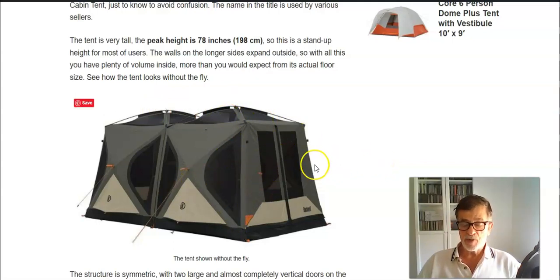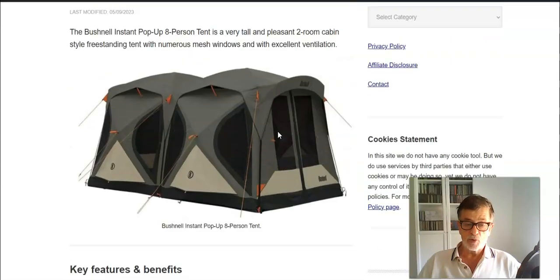I'm saying it is semi-instant because there is still some work to do around the doors, because there are several poles to put in place. As you see, the doors are practically vertical but this is because of the poles that you have around. And there are also two shorter poles that you use to support the fly because the fly creates small awnings above the door.